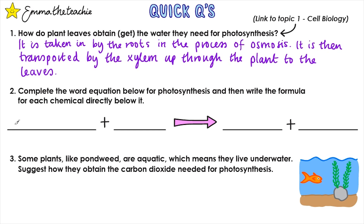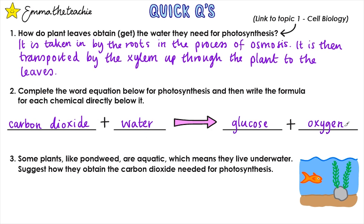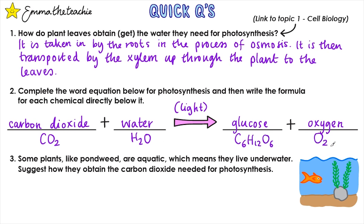Question two: complete the word equation for photosynthesis and write the formula for each chemical below it. On the left we've got carbon dioxide plus water, and on the right is glucose plus oxygen. You can write light along the arrow. The formulas are CO2, H2O, C6H12O6, and O2.